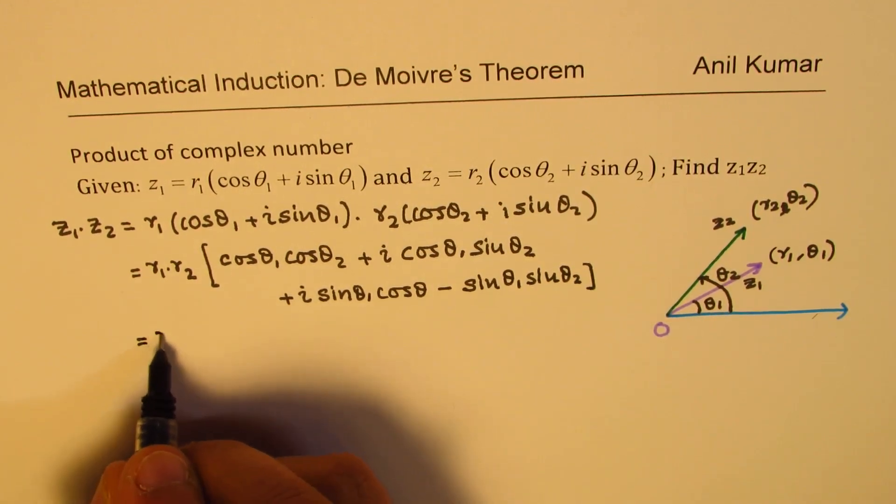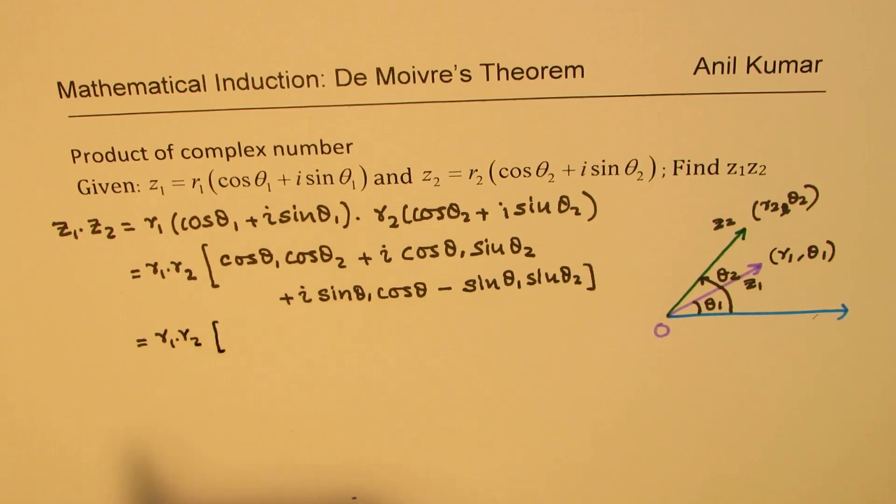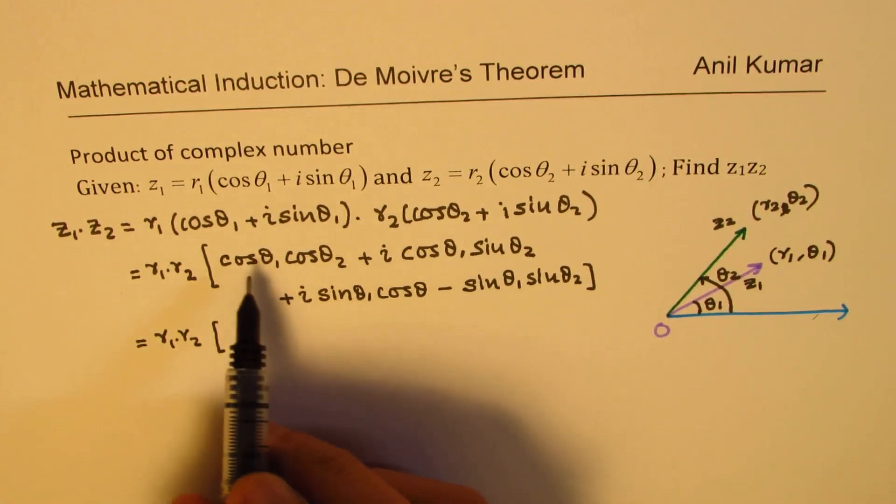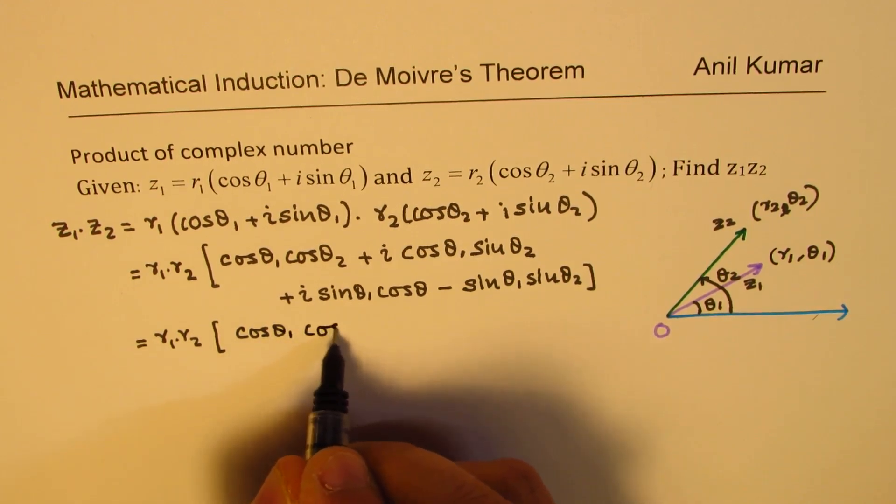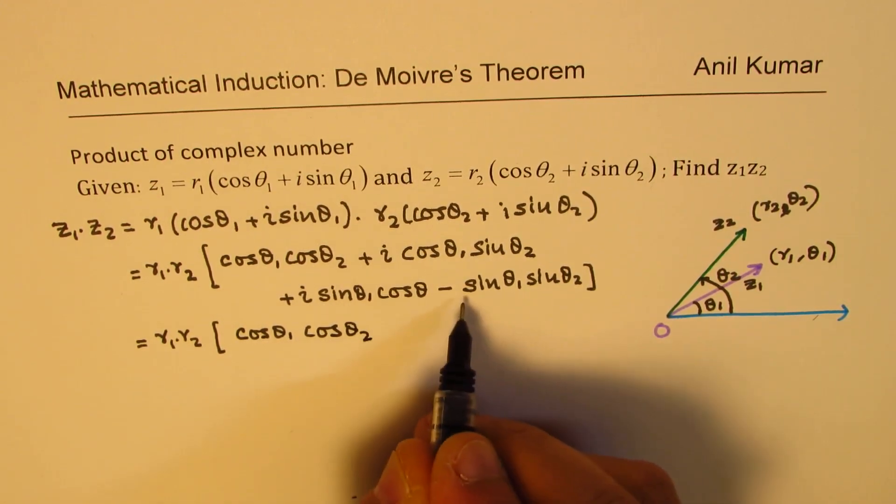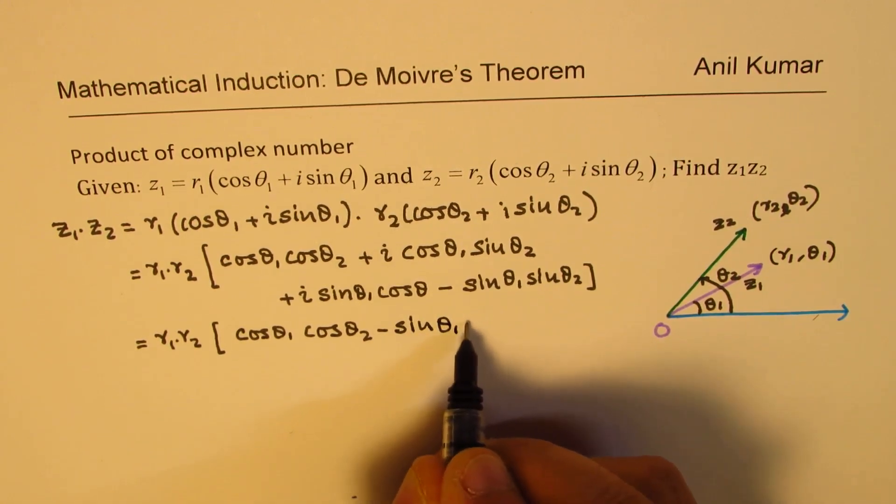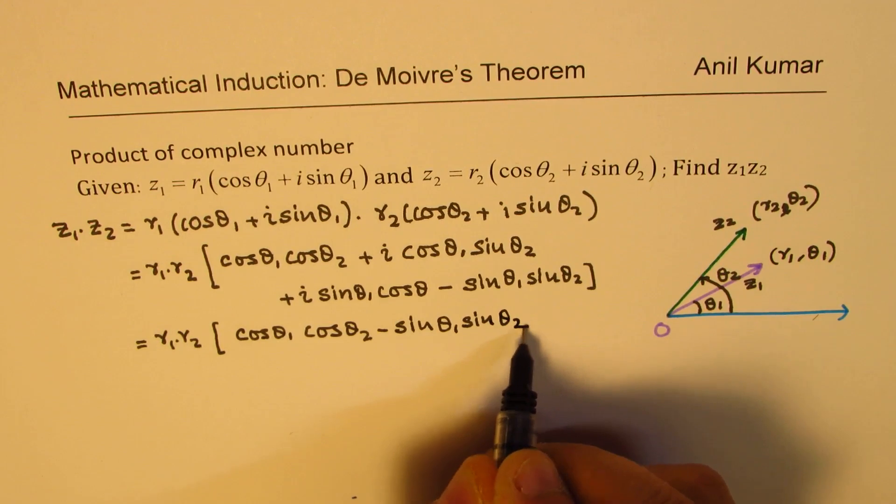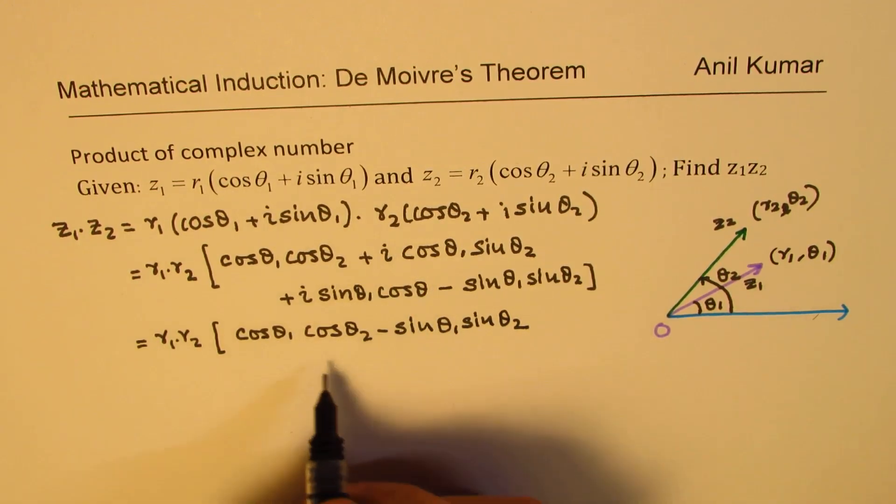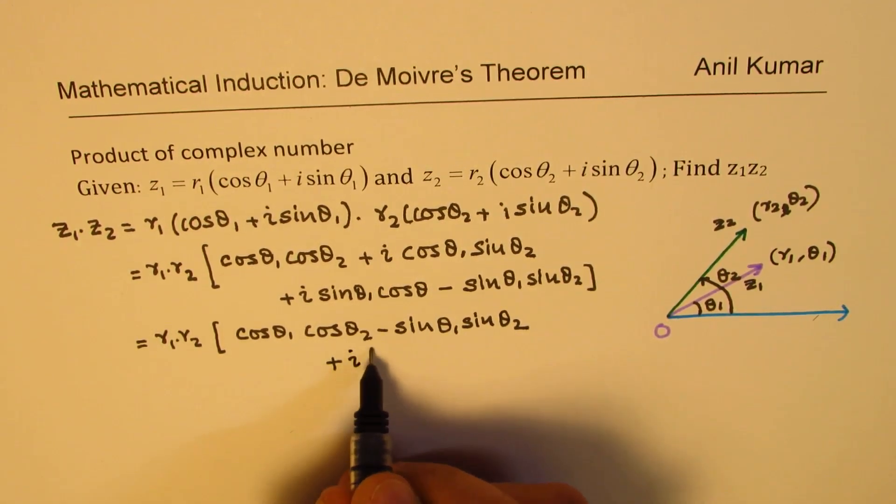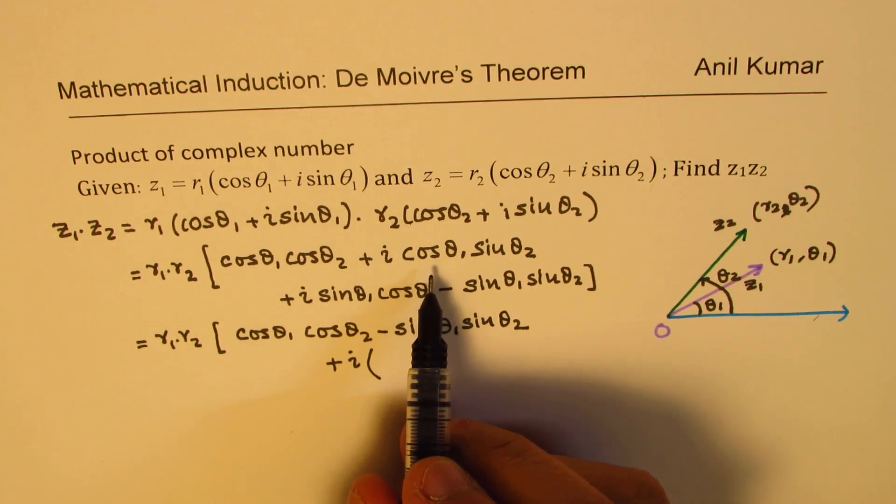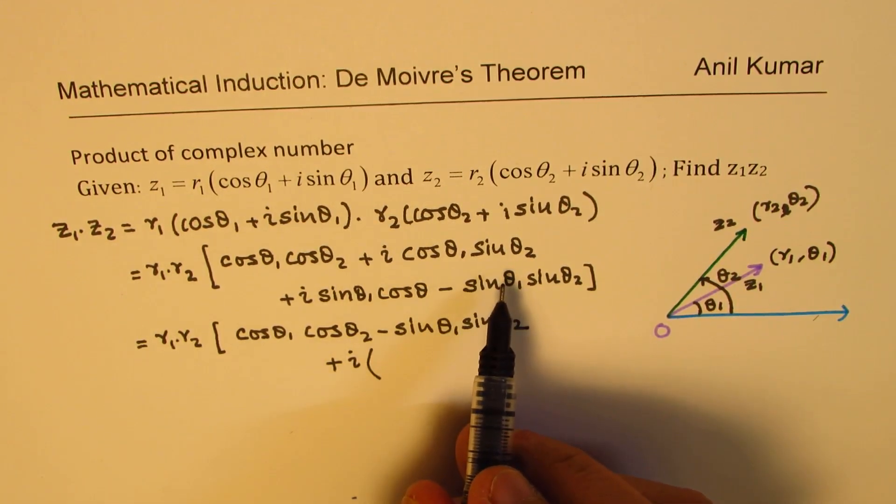So that could be written as the product of r1 and r2. Now combining the terms which are real and imaginary we get cos θ1 cos θ2 minus sin θ1 sin θ2. And for the i terms we could write this as plus i.